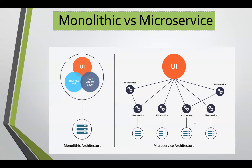Now, what is the difference between monolithic versus microservices? In monolithic, we have a UI layer, business logic, and data access layer — three layers combined into a single WAR file. If you want to do a small change, you need to redeploy on the server, and the whole application goes down. Also, in monolithic architecture, you can only communicate with a single database and cannot develop with multiple technologies.